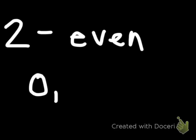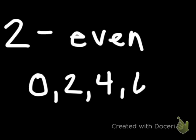How do we determine if a number is an even number or not? You look at the last digit. If the last digit ends in 0, 2, 4, 6, or 8, then we know it's an even number.